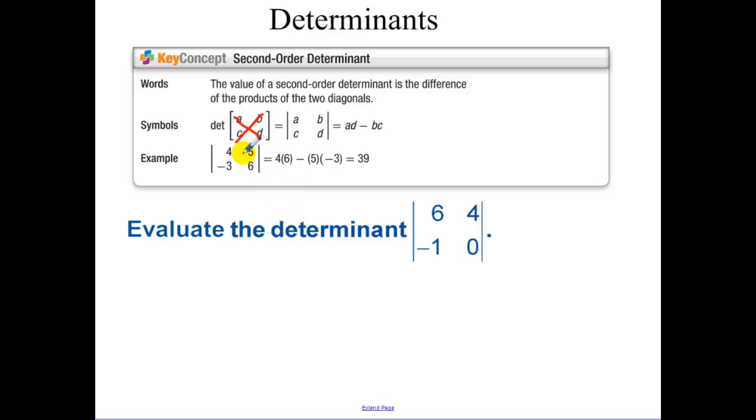In our first example, you do 4 times 6, which is 24, minus 3 times 5, which is negative 15, and that's how we got 39.